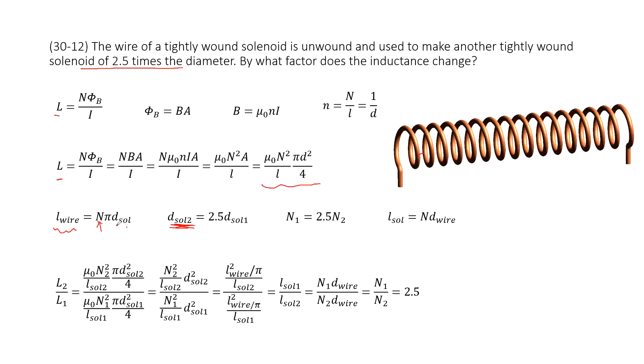So the n₁ should be 2.5 times n₂, because we say the length of wire should be constant, right? So n₁ should equal 2.5 times n₂. And the next one, if we want to find the length for the solenoid, that is how many turns for these wires times the diameter for the wire.